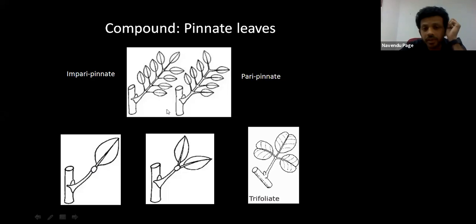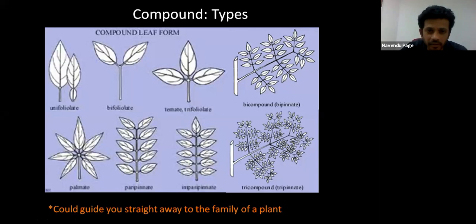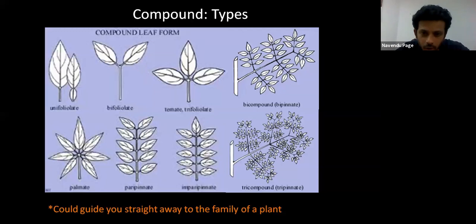To summarize what we've learned: you have unifoliolate, bifoliolate, and trifoliolate leaves, then unipinnate, bipinnate, and tripinnate, and also digitate leaves. Digitate leaves generally don't have further classifications, but pinnate leaves have unipinnate, bipinnate, and tripinnate. The reason I'm telling you all this is that just by ascertaining the kind of compound leaf, you can directly gain insights into what particular family that plant could belong to.